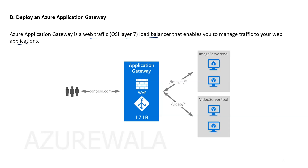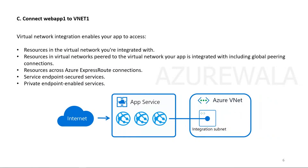Option C: Connect Web App 1 to VNet1. To connect the web app with a virtual network requires virtual network integration, and this feature is available in the web app to connect with resources in a virtual network.